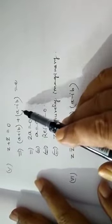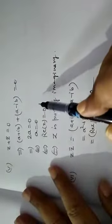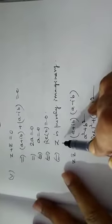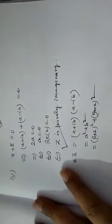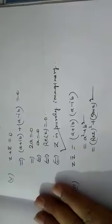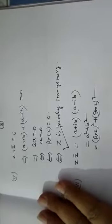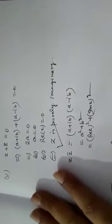Now I want to prove the next property: z plus z bar equals zero. If z equals a plus ib and z bar equals a minus ib, their sum equals 2a equals zero. This implies a equals zero, meaning if z plus z bar equals zero, then the number is purely imaginary — the real part is zero and the number has only an imaginary part.